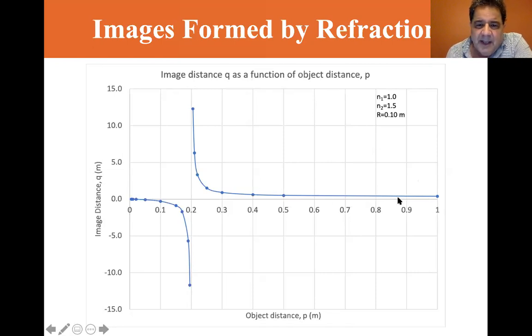As we start moving the object closer and closer, you can see that the image distance becomes very far away. But there's a point here that happens to be at 0.2 meters, 20 centimeters, where it kind of blows up, like when we were looking at the concave mirror. As I approached it, there was a point where it just blew up and reversed.